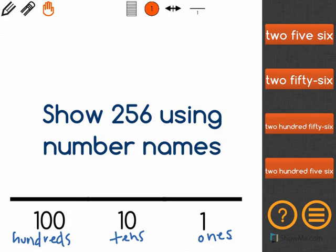I see in the ones, I have six, so I'll write down six. I see in the tens, I have a five, so I know that five tens is fifty, so I'll write down fifty.